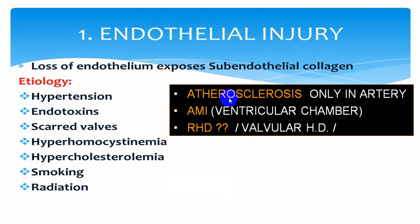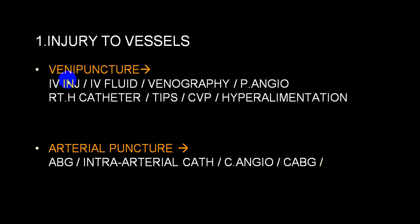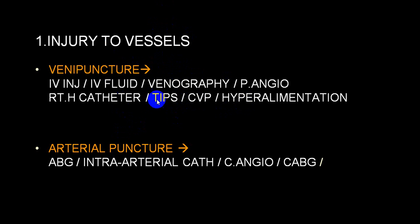Endothelial injury causes: atherosclerosis involves arteries; acute MI involves ventricular endothelial lining; rheumatic and valvular heart disease involves cardiac chambers and valvular structures. Other conditions damaging the endothelium include hypertension, endotoxins, scarred walls, hyperhomocysteinemia, hypercholesterolemia, smoking, and radiation. Venipuncture procedures — IV injections, venography, pulmonary angiography, right heart catheterization via jugular vein, central venous pressure lines, and TPN — produce thrombosis on the venous side.